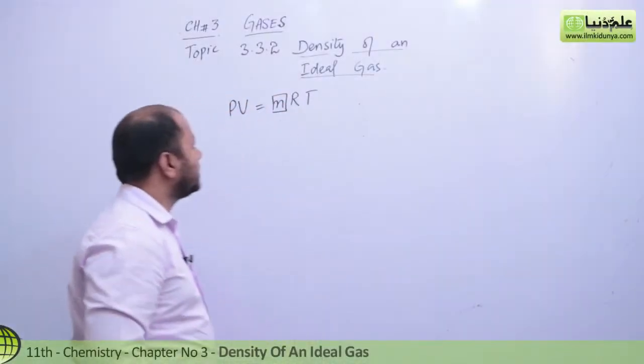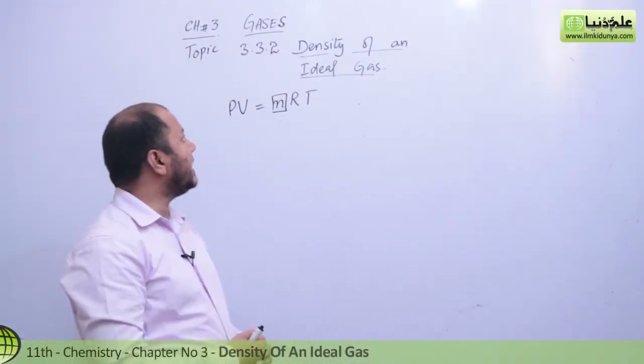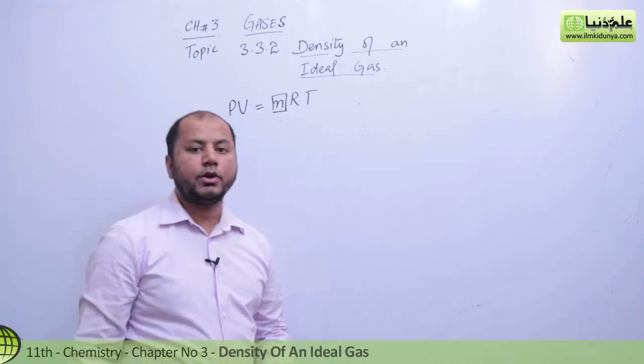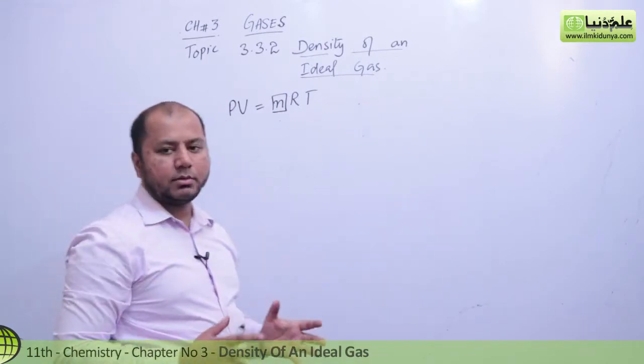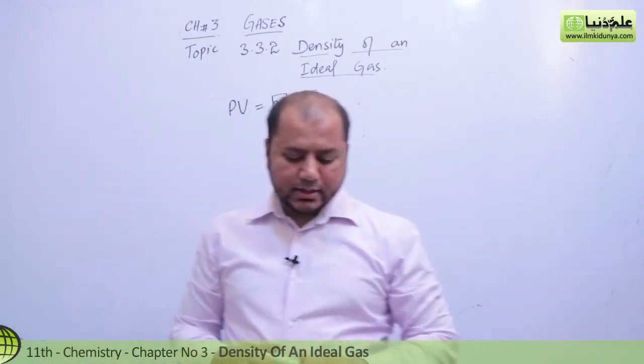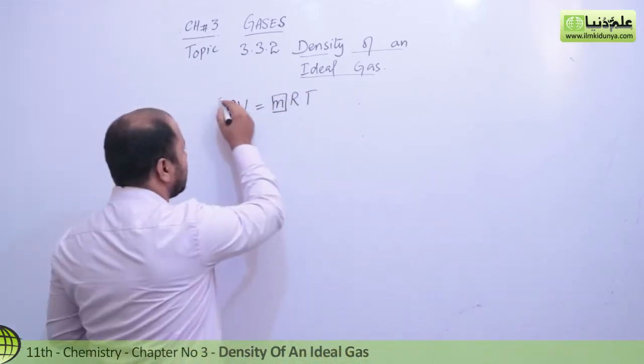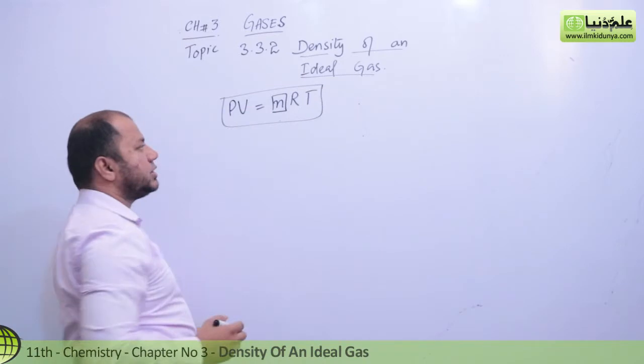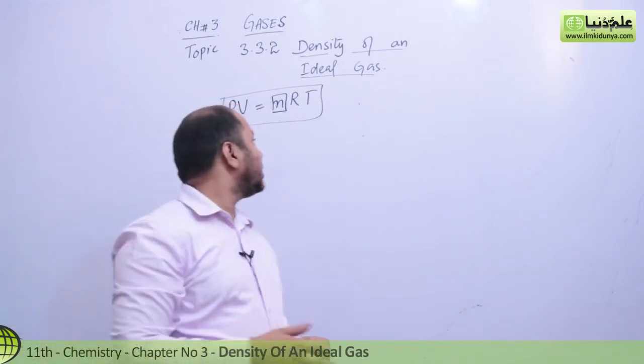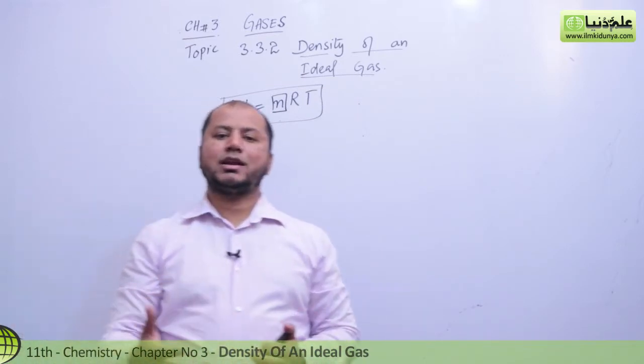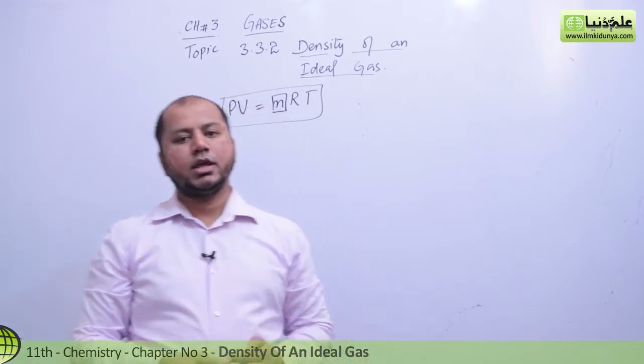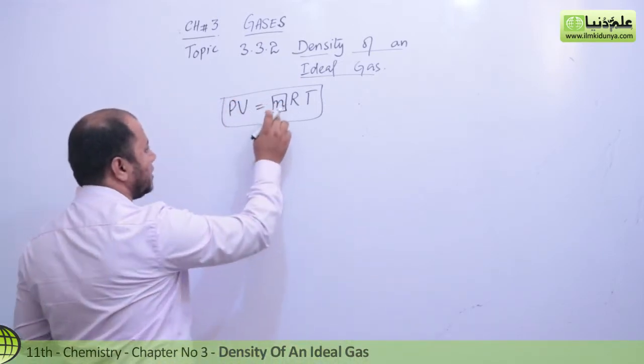Okay students, in today's lecture we're going to talk about density of an ideal gas, topic number 3.2, the third term of gases. As you know the general gas equation, the product of pressure and volume is equal to the product of number of moles and general gas constant R and temperature T. So what we will do is conclude out the value of n.